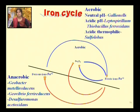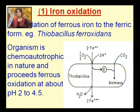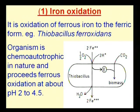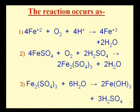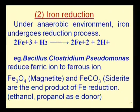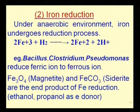In detail, iron oxidation — conversion of Fe²⁺ to Fe³⁺ — is normally carried out by Thiobacillus organisms at pH 2 to 4.5. Iron reduction normally occurs under anaerobic conditions, where Fe³⁺ is converted to Fe²⁺ by organisms like Bacillus and Clostridium.